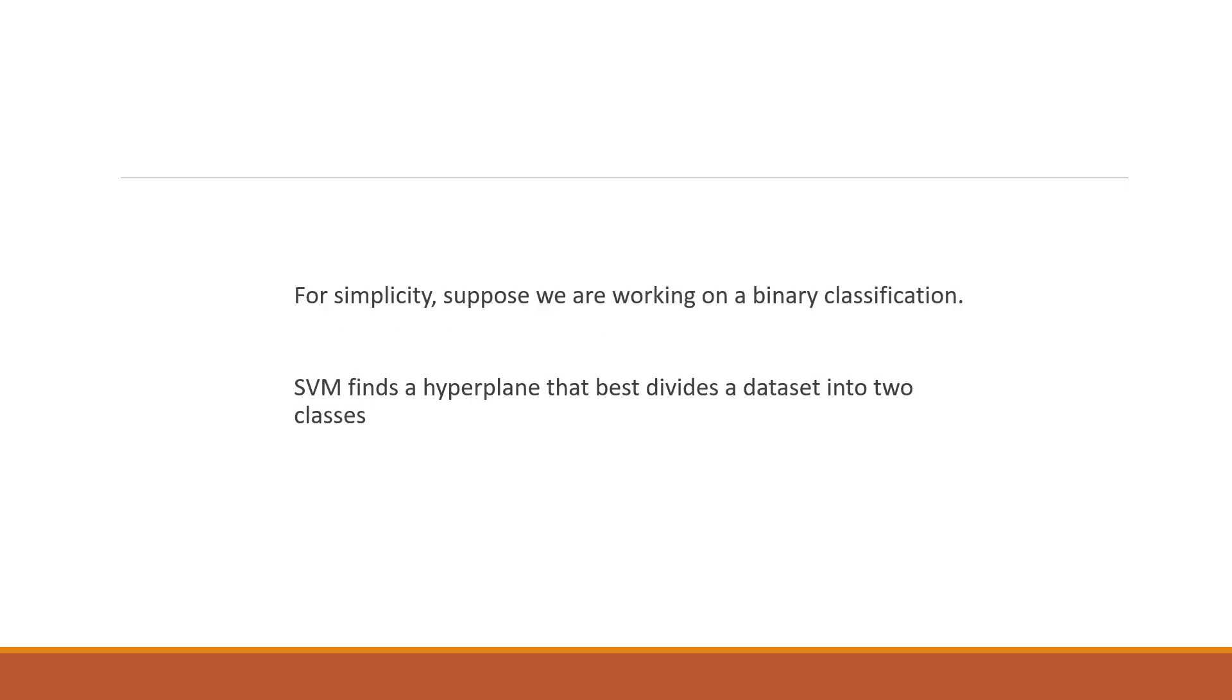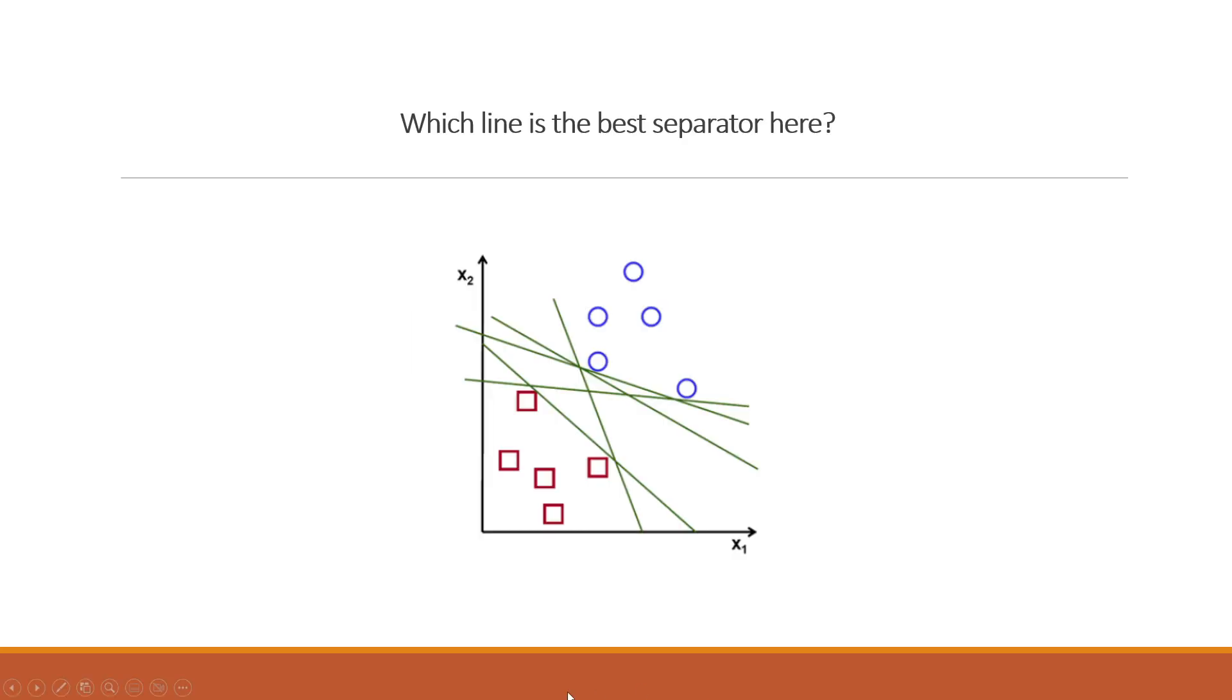For simplicity, suppose we are working on a binary classification, that means it has only two classes. What does support vector machine do? Suppose these are one class and these rectangles are another class. How can we separate them?